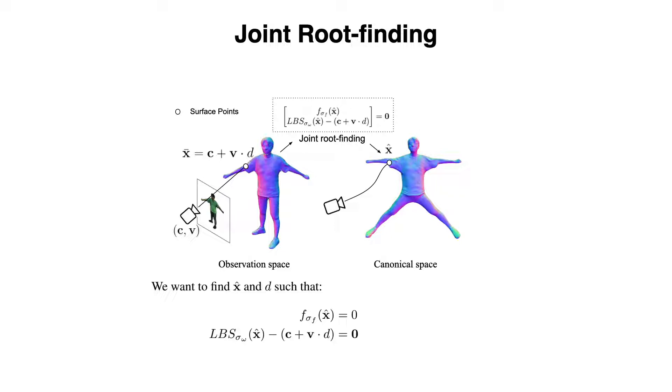Given a camera ray defined by camera center C and viewing direction V, we aim to find a canonical point X-hat and its depth D on the camera ray which satisfy both SDF isosurface condition and LBS condition.